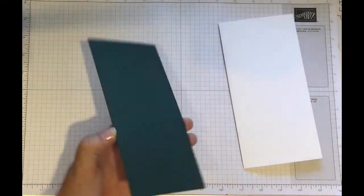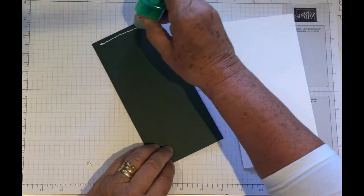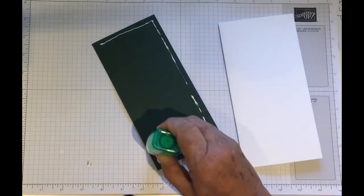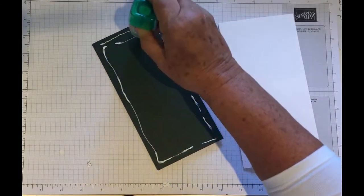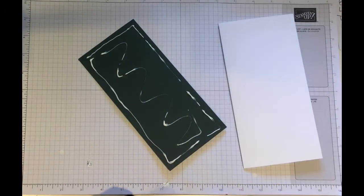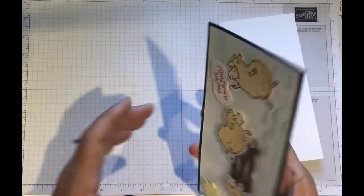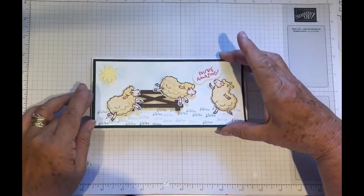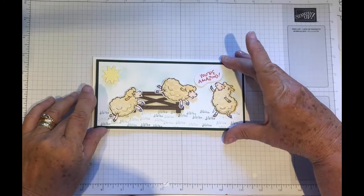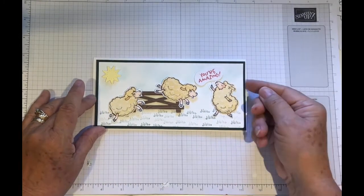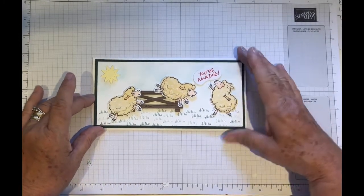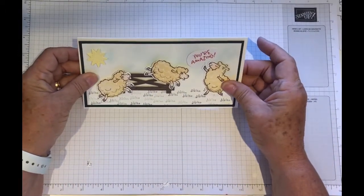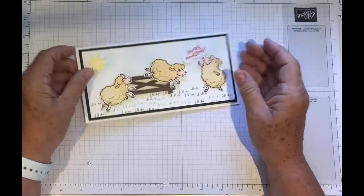So we just now need to add the card front to the card base. Just add liquid glue. And place centrally onto your card base. Using liquid glue just gives you that little bit extra time. If you've not got it quite straight, then you've got time and the ability to actually move it. Whereas if you use stamp and seal, you've got to get it right first time.